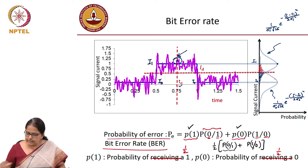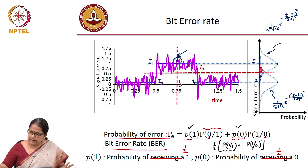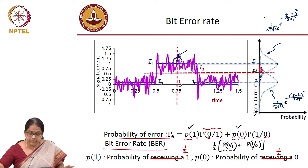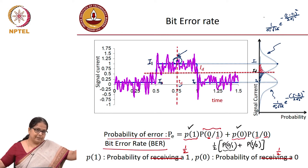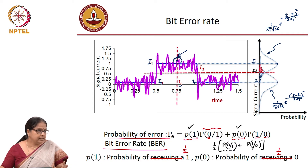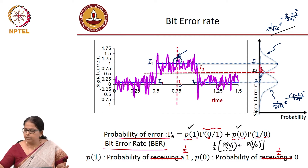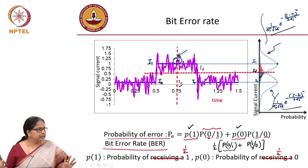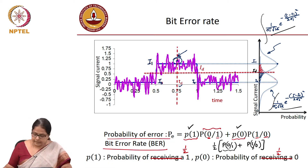So how do I find these probabilities? Integrate. For the red case, I have to integrate from iD to infinity — ideally the probability should go all the way up to infinity. And probability of 1 given 0 would be from minus infinity to iD. What should I integrate? These distributions, which we already know. Integration of these distributions with the correct limits will give me the bit error rate.